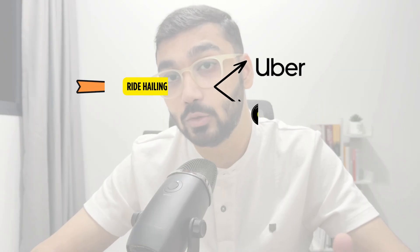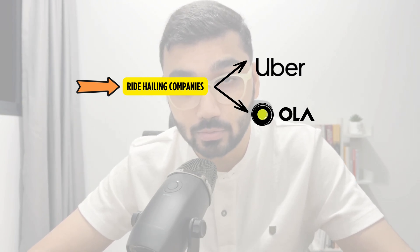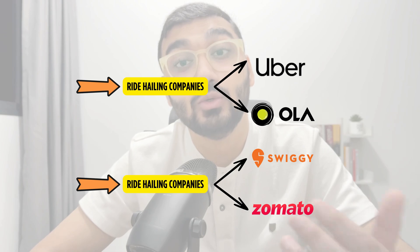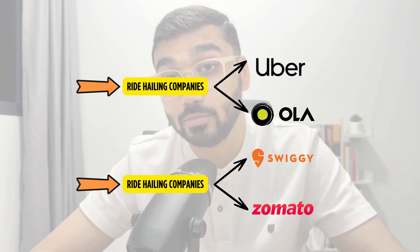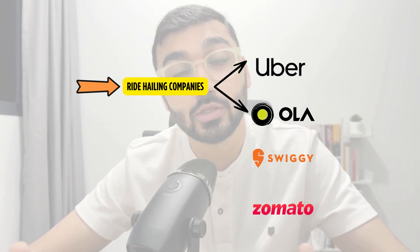Some of the most commonly asked questions you should practice are building data models for ride-hailing companies like Uber and Ola, food delivery companies like Swiggy and Zomato, video streaming services like Netflix and YouTube, cloud storage platforms like Dropbox, and social media apps like Instagram and Facebook. Practicing these gives you a complete idea of how to build data models, define relationships, and handle different kinds of scenarios.